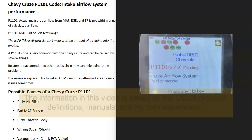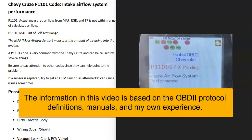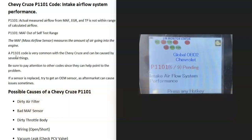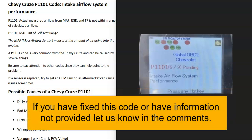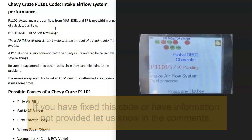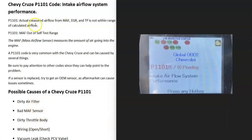Today I'm talking about a Chevy Cruze with the P1101 code — what it is and how you go about fixing it. A Chevy Cruze P1101 code is an intake airflow system performance. Depending on which scan tool you're using, you might get definitions like actual measured airflow, MAF, EGR, and TP is not within range of calculated airflow, or MAF out of self-test range.